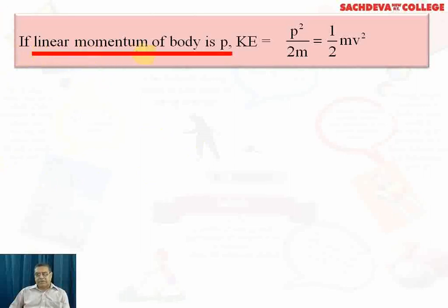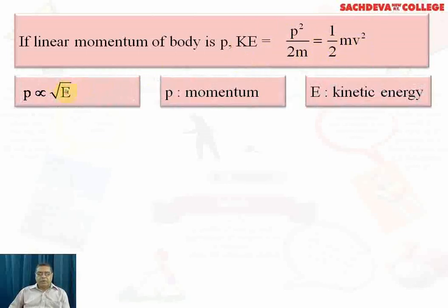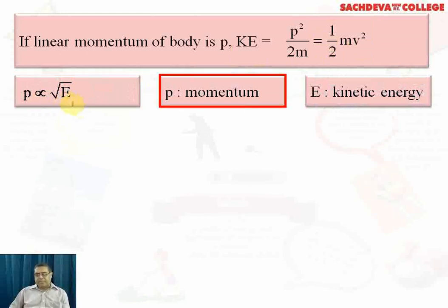If linear momentum is taken as p, we can write kinetic energy half mv² in terms of linear momentum. Half mv² can be written as half m times v times v, where mv is replaced by momentum p. So the expression becomes: kinetic energy = p²/2m = half mv². From this, p is proportional to the square root of kinetic energy, where p is momentum and E is kinetic energy.